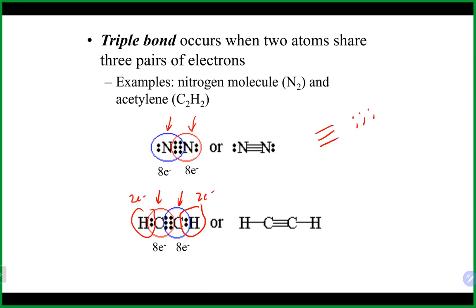A common problem is that people like to double bond or triple bond right out of the box. I'd highly recommend usually single bonding everything first, then looking to see if the octet rule is met. If it's not, that's when you incorporate a double bond or triple bond to fix the situation. Don't double bond or triple bond right away — save that to fix cases where the octet rule is not met.